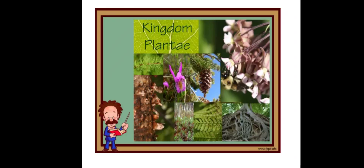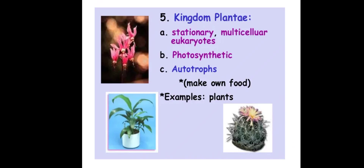Next is Kingdom Plantae. Plants are stationary, multicellular eukaryotes. A very important characteristic feature of Plantae is that they are photosynthetic autotrophs — they make their own food. So the key characteristics of Plantae are that they are photosynthetic and autotrophic.